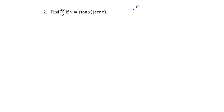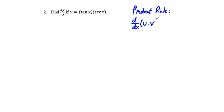To summarize the product rule: the product rule states that if you have d/dx of the product of two functions — we'll call them u and v — the derivative is that first function u times the derivative of the second function v, plus that second function v times the derivative of the first function u.